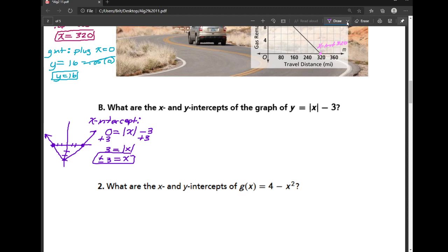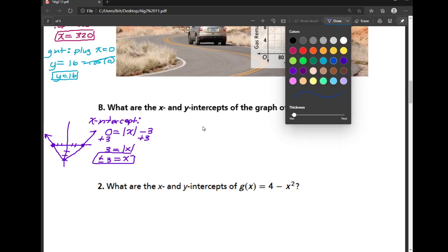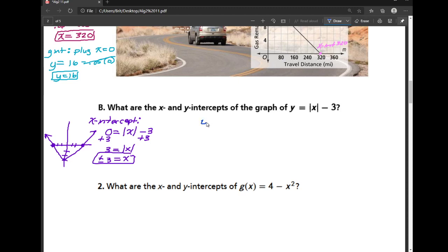Now the y-intercept, you can actually see from the graph that I gave you. But the y-intercept, I'm just going to find by plugging in 0 for x. So I get y is equal to the absolute value of 0 minus 3. The absolute value is just a distance. So the distance from 0 to 0 is 0. So that just goes away, leaving me with negative 3. And you see that on my graph right here, where I moved it just down by 3.